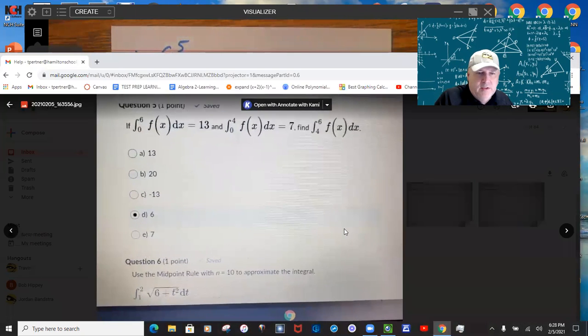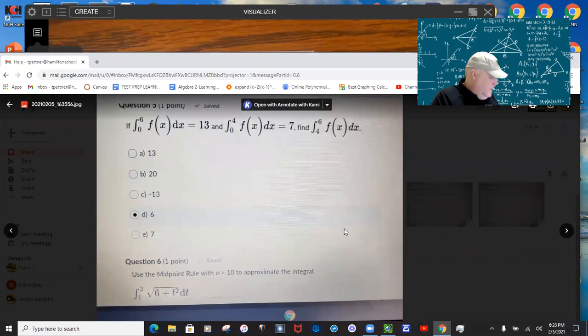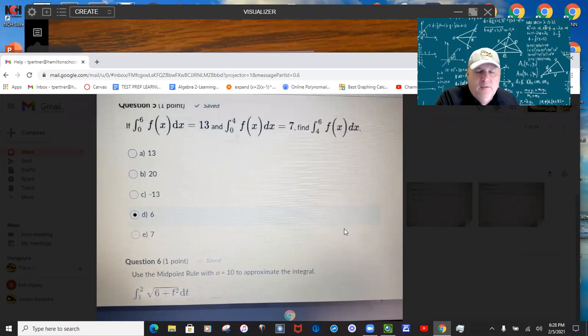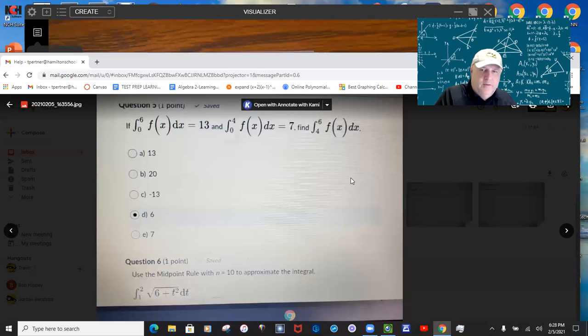Next problem is this one, which is really easy. I don't even think I need to show my card on it. It's just they didn't even make it hard. So zero to six, so zero to four, and then four to six, you sum those two together and it's got to be six. So you got that one, right? Very, very simple problem.